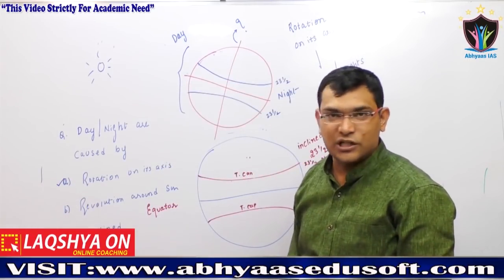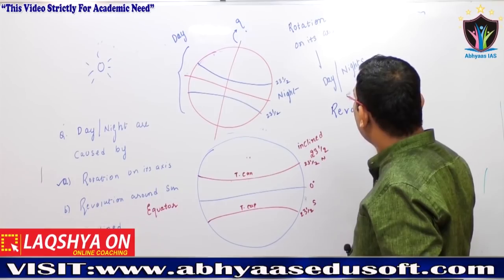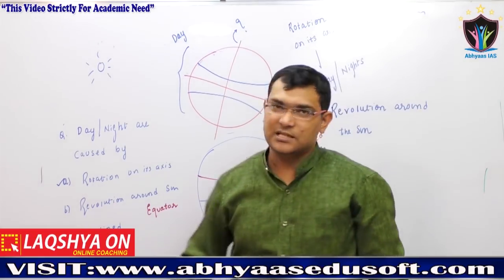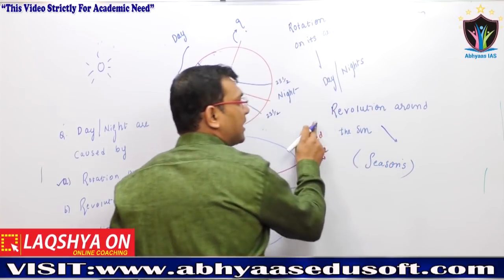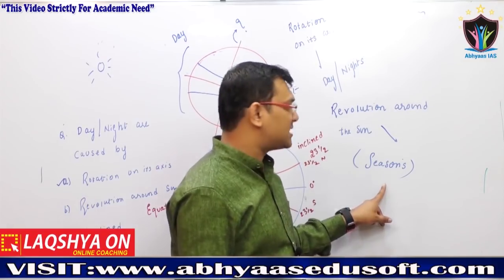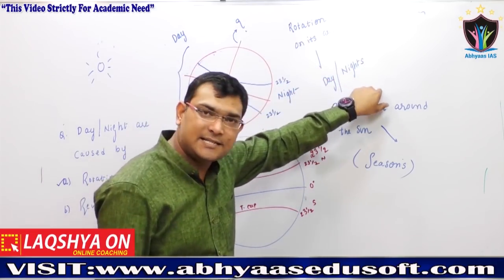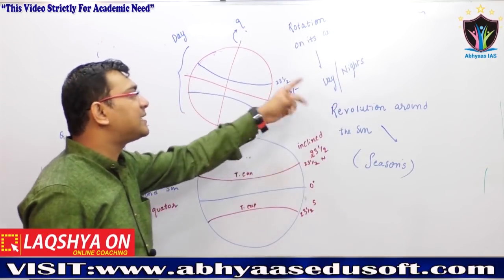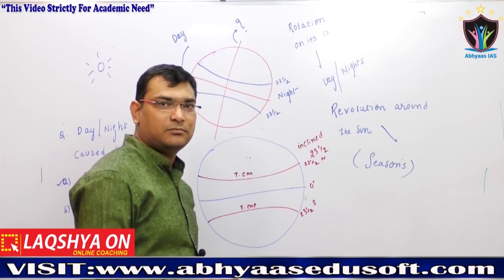Now, what will be the resultant of revolution around the Sun? The resultant will be seasons. Seasons are caused by revolution around the Sun. When the earth revolves around the Sun, seasons are produced. When the earth rotates on its own axis, the resultant is days and nights. So: revolution → seasons, rotation → days and nights.